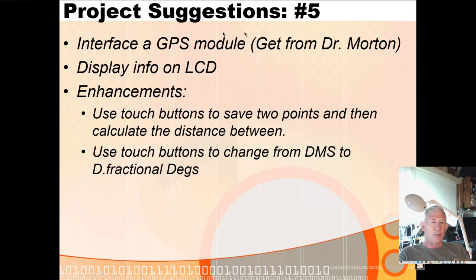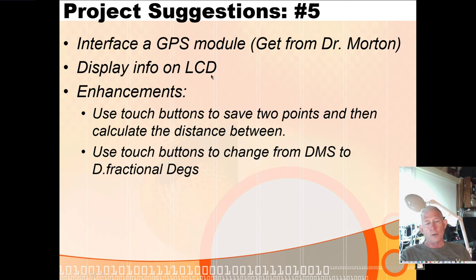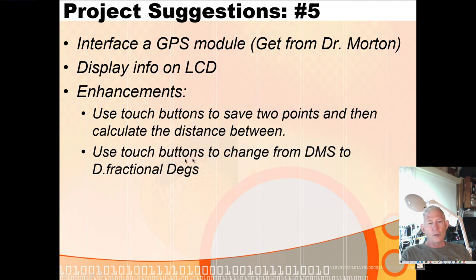GPS: you can interface a GPS module — I've got several. It communicates with UART; you can split your UART so the receive part gets information from the GPS and the transmit part sends it out. Use an LCD with I2C or a terminal with your CR-2102. Use touch buttons to save two points and calculate the distance between them — stand at one point, walk to another, hit the first button at the first point and second button at the second, then read out the distance on your LCD. Or use buttons to change between degrees-minutes-seconds and fractional degrees.